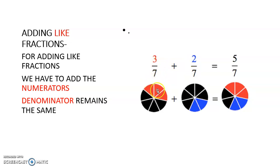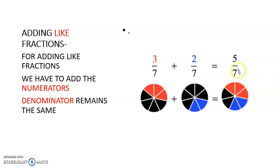3 upon 7 means 3 parts are red out of 7 parts, and 2 upon 7 means 2 parts are blue out of 7 parts. So in total, 3 plus 2 gives us 5 out of 7 parts are colored.